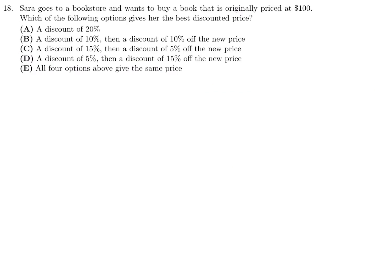Sarah goes to the bookstore and wants to buy a book that is originally priced at $100. Which of the following options gives her the best discount? Let's calculate. A discount of 20%: you take 0.8 and multiply it by 100, and that's 80. Discount of 10%: that'd be 0.9 times 100, which is 90, and then another discount of 10%. So you take that 90 and multiply it by 0.9 like that, and that would result in 81.